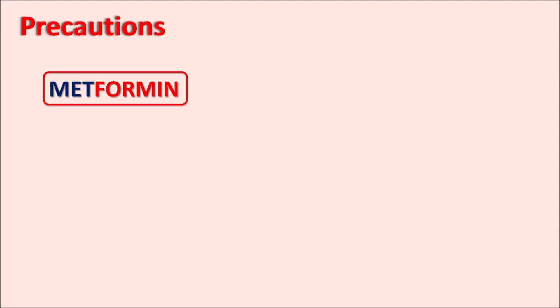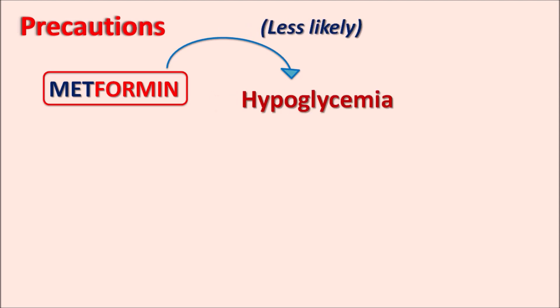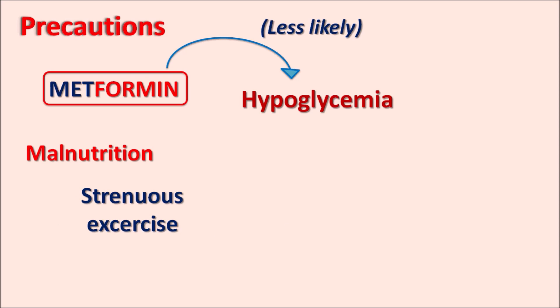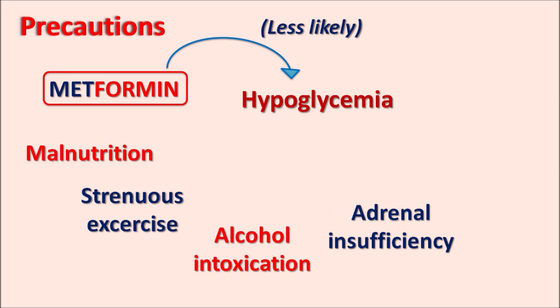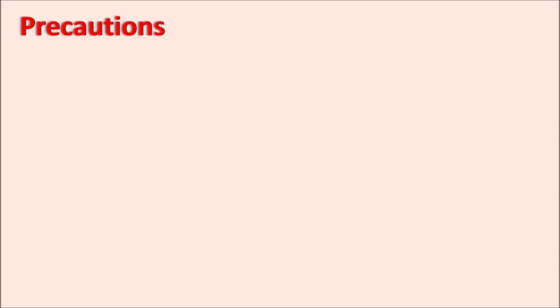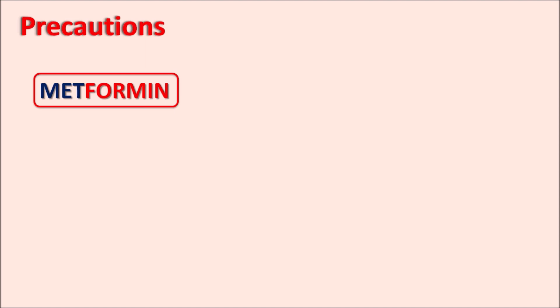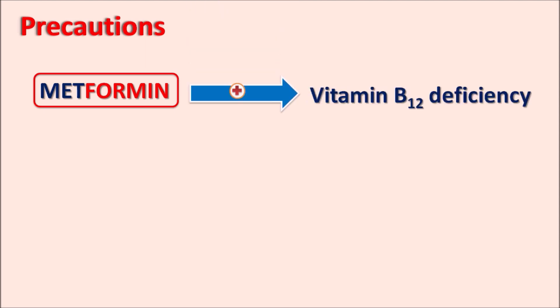Because metformin increases insulin sensitivity without secreting insulin, it is less likely to cause hypoglycemia. However, hypoglycemia risk increases with malnutrition, strenuous exercise, alcohol intoxication, adrenal insufficiency, or concurrent use of other anti-diabetic agents such as sulfonylureas. Additionally, metformin can reduce the absorption of vitamin B12, leading to vitamin B12 deficiency, though this may not always cause anemia.